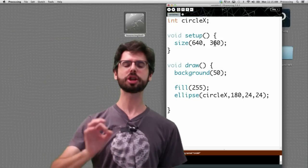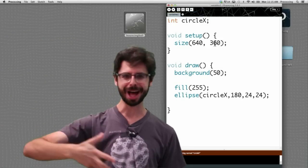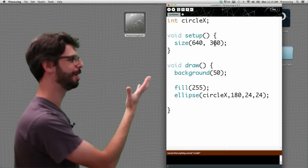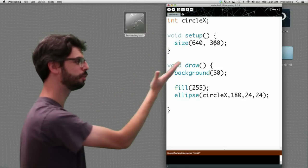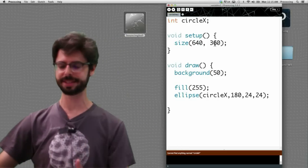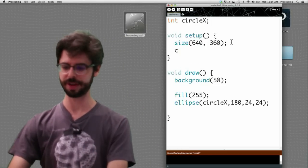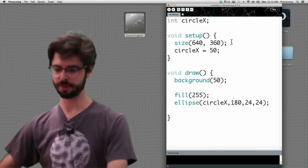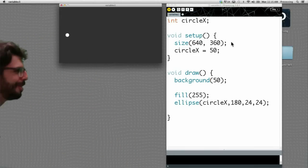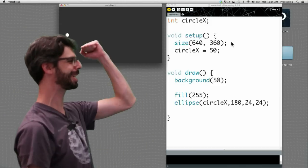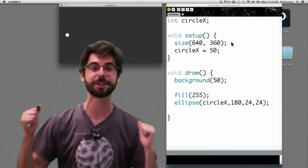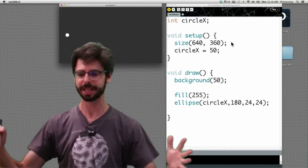We want circle x to begin its life with the value 50. Look at our flow of our program. We have a declared variable. Setup happens once. Draw happens over and over again. We want to initialize circle x's value in setup. That's where we'll give it its first value. Circle x equals 50. We run this program. Oh my goodness. This is super amazing and wonderful. We have a user defined variable. We declared it. We gave it a type. We gave it an initial value. Now we're using it and the circle is at the value 50. This is going to open up a huge amount of possibilities. This is fantastic.